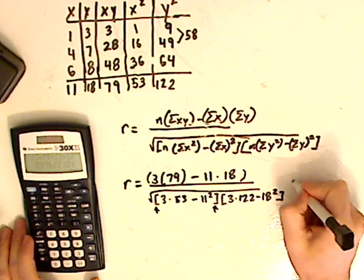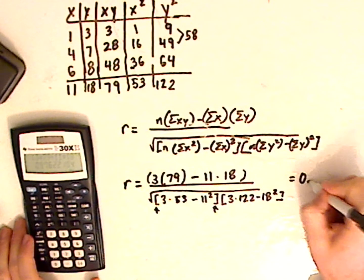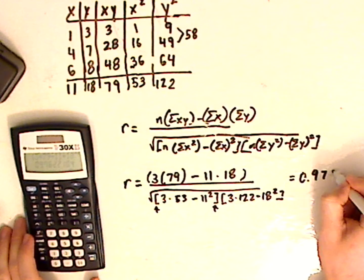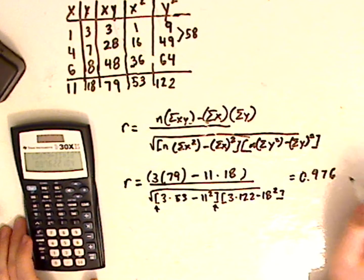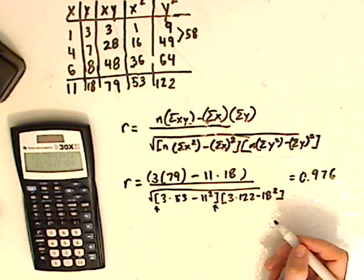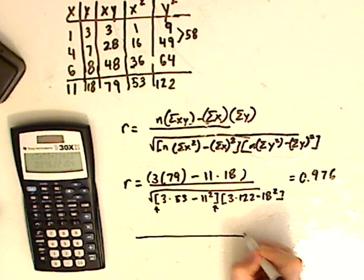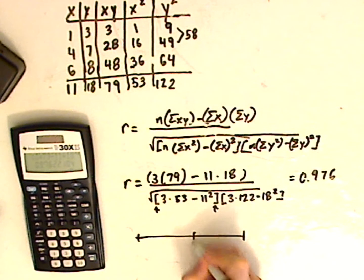And so I get equals 0.976. Now what does that mean? Well, with the correlation coefficient, you have a scale.